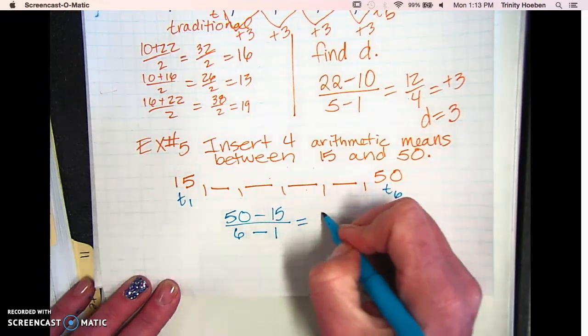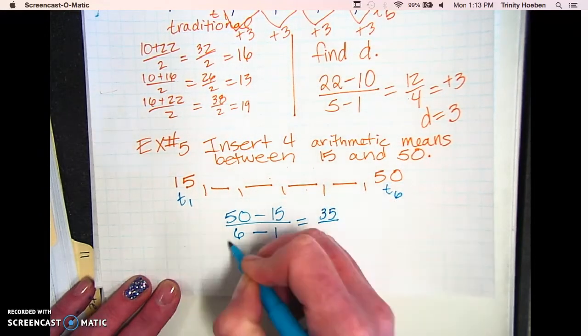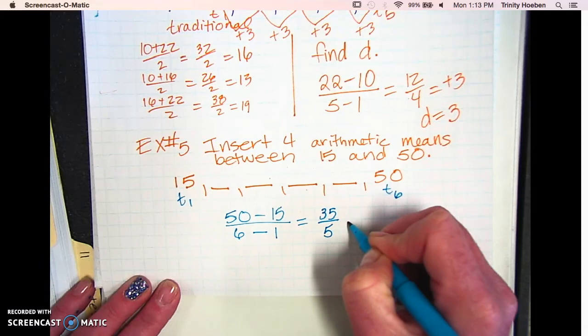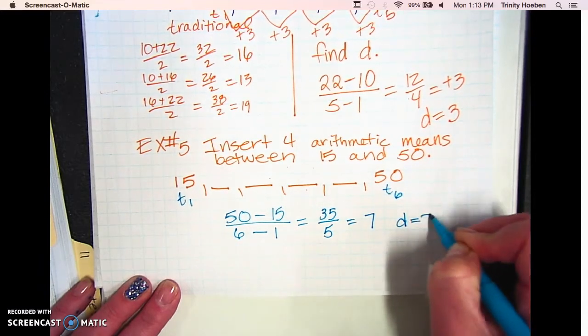So 50 minus 15 is 35. Six minus one is five. That means the difference is seven.